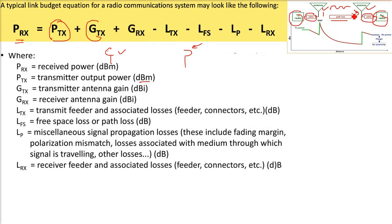LTX—there will be feeder and connectors in the transmitter. We also have KTB, the thermal losses. So that is a loss. LFS is the free space loss we just discussed, in dB. LRX is the receiver feeder and associated losses—connectors, feeders, etc. Then we have LP, which are miscellaneous losses like fading margin, polarization mismatch, and medium. There are other losses which we compute as LP.